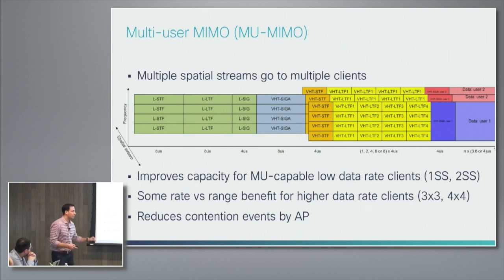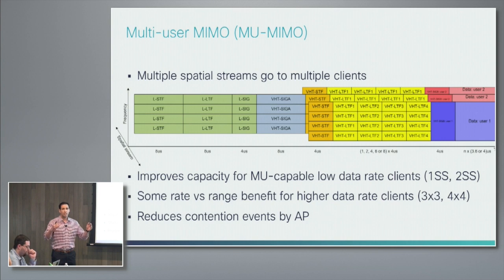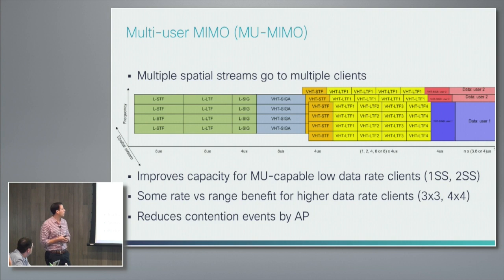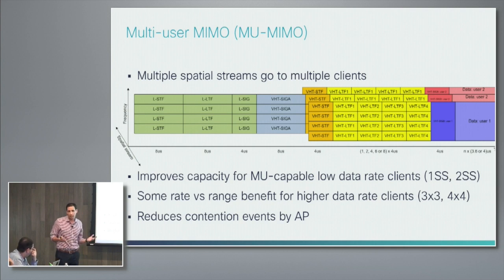It also has the benefit that in a really busy wireless medium with lots of clients, you have lots of contention events. If you can reduce those contention events, it helps overall capacity. Instead of sending three separate packets to three one-by-one clients, you're sending one packet to all three — you've just reduced contention to a third.